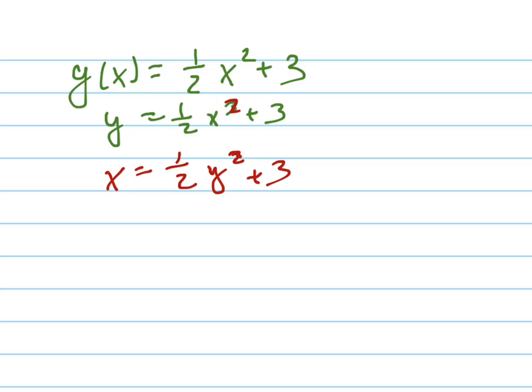So I'm going to subtract 3 from both sides. I'm going to multiply both sides by 2, so 2x minus 6 equals y squared. And now I'm going to take the square root of both sides.